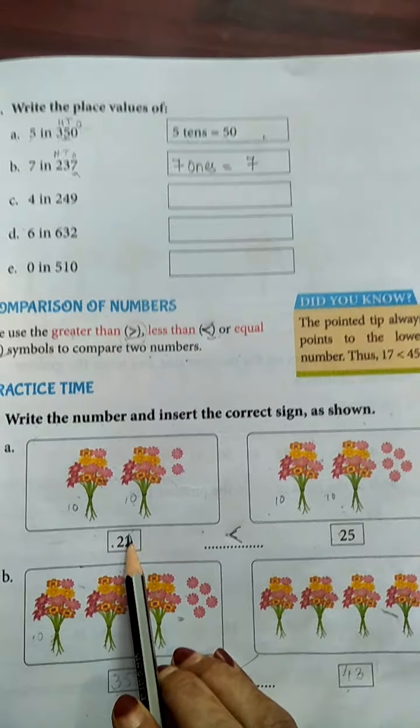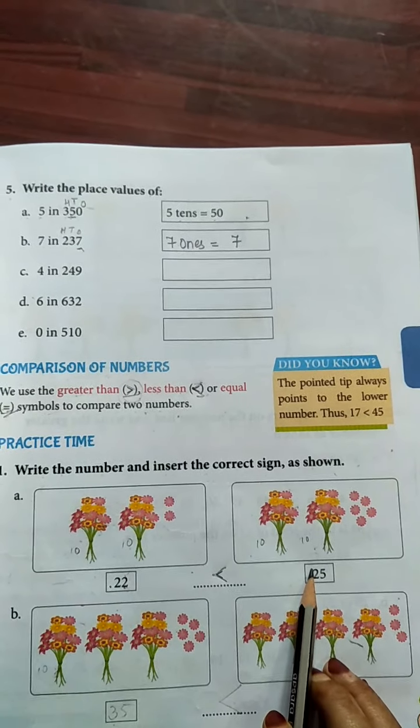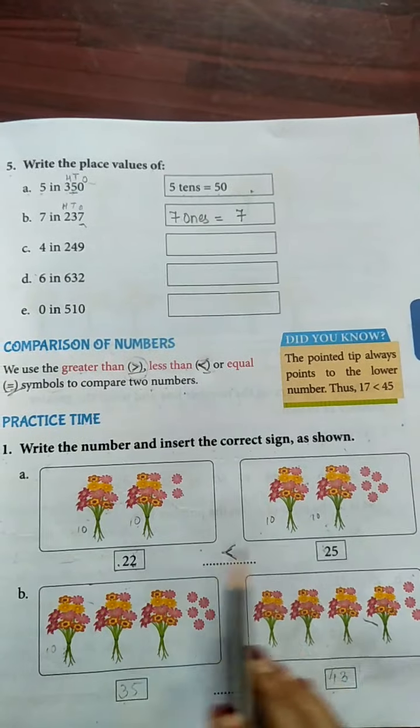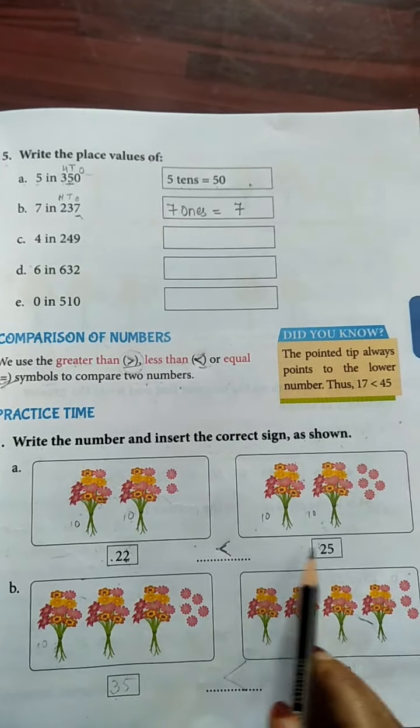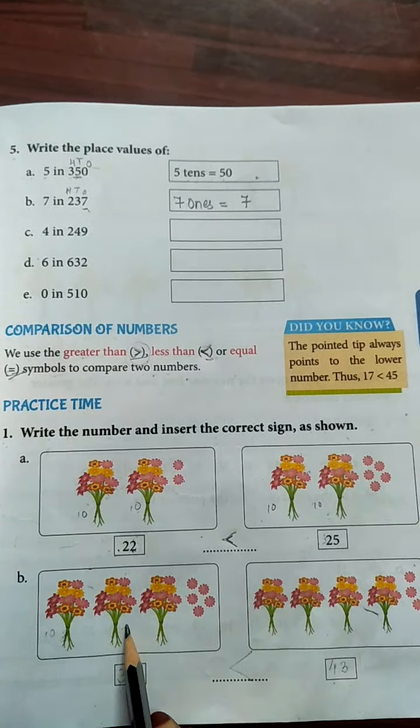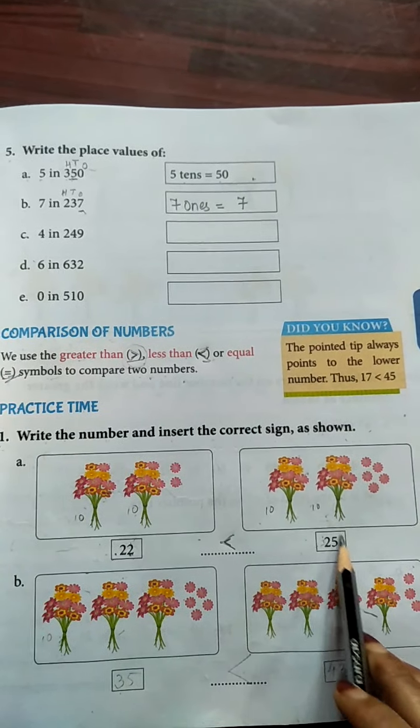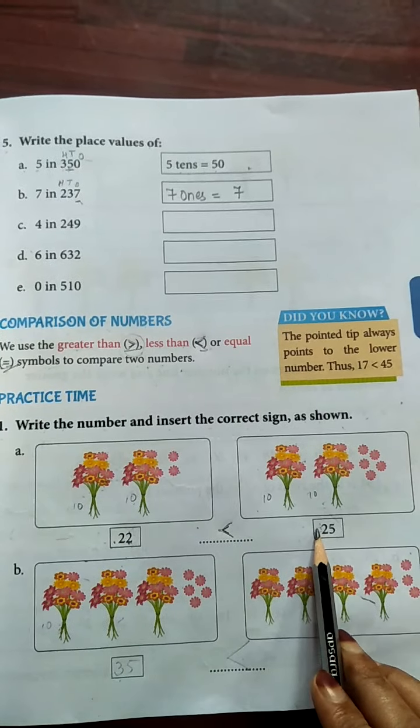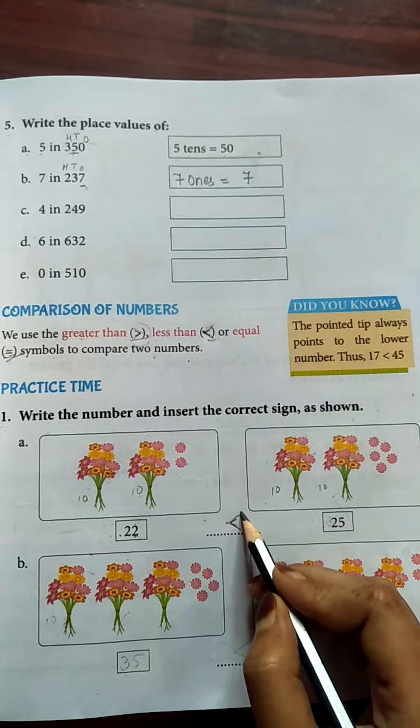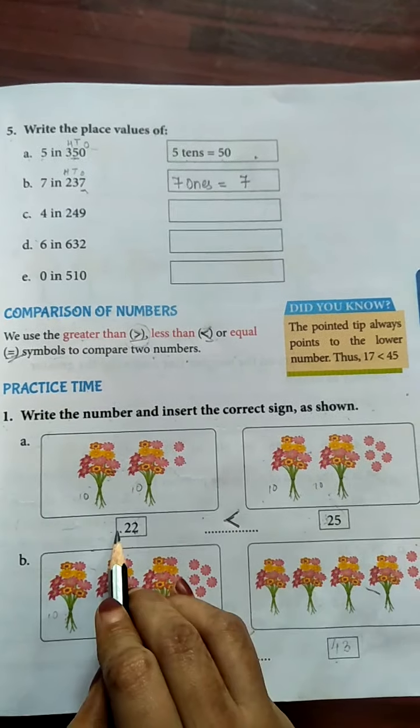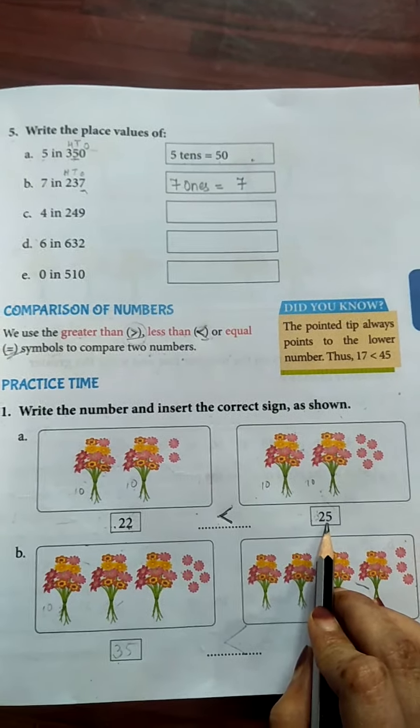So here 22 and 25. So which is the greater number, 22 or 25? So 25 is the biggest number or greater number. So 22 is less than 25.